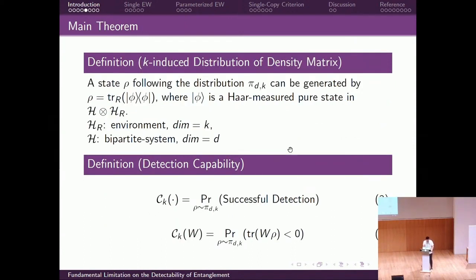As we are talking about probability, we need some kind of distribution. The density matrix does not have a natural distribution, since it lacks a group structure. So we define the K-induced density matrix: a state rho following distribution pi_{dk} can be generated by tracing out the environment of a Haar-random pure state in H⊗H_R, where H_R is an environment with dimension K and H is the bipartite system of interest with dimension D. The system we consider can be generated by tracing out the environment. With this distribution, we can define the detection capability of an entanglement criterion as simply the probability of a successful detection.